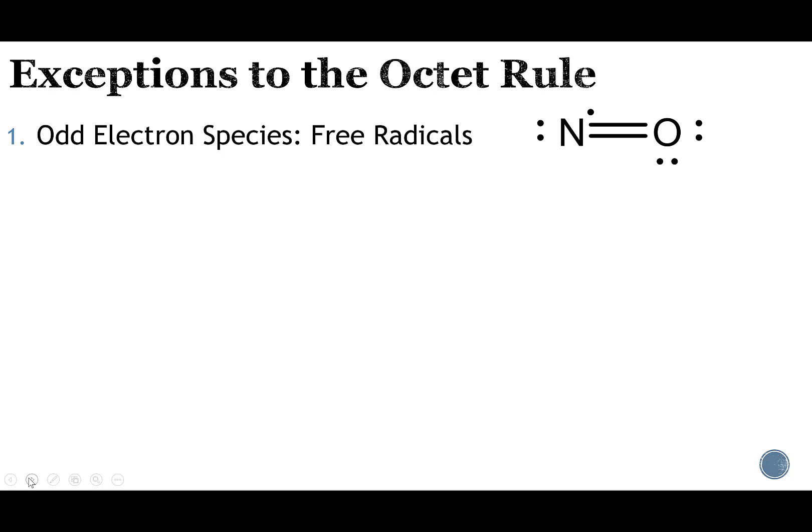So the first exception: odd electron species. I mentioned back in another video, if you ever add the number of valence electrons and it's an odd number, the red flag should start to fly. Everything we talk about involves bonding pairs and lone pairs, so having an odd number leaves an electron by itself. It happens, it exists, it's not common. When there is an odd number of valence electrons, we call that a free radical.